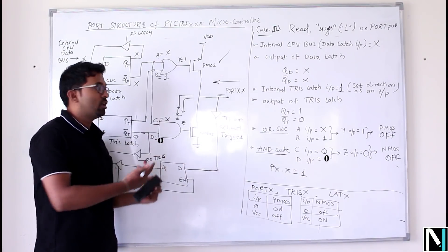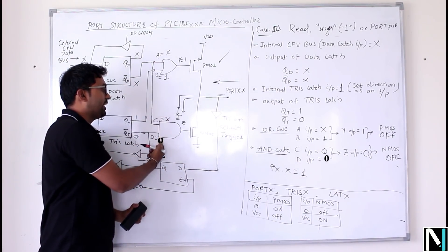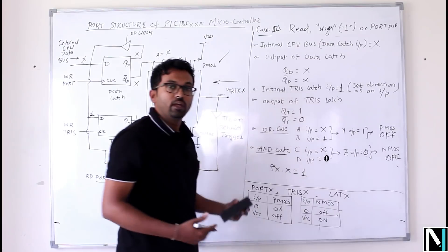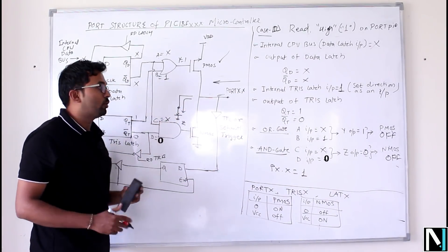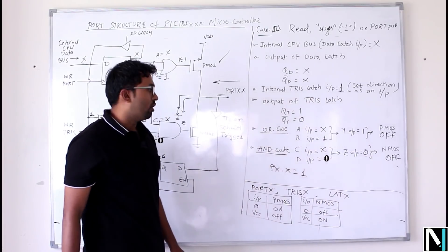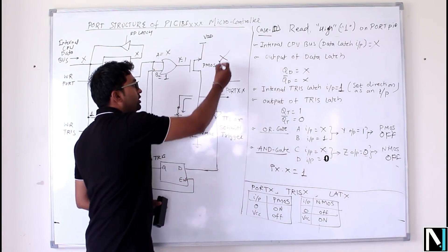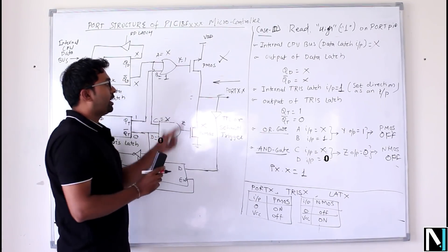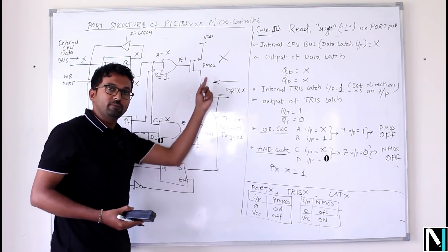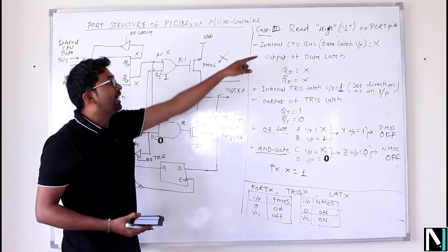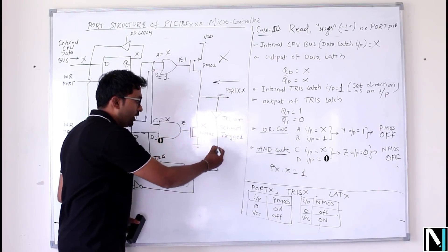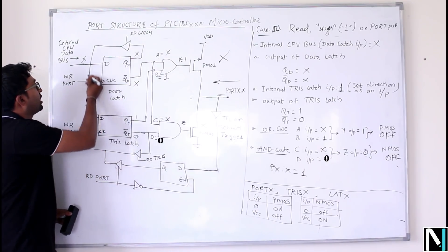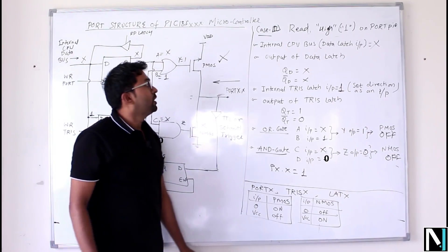For the AND gate, input D is don't-care multiplied by C (also don't-care), but since B is 1 and the AND gate receives the don't-care C, the output Z = 0, keeping NMOS OFF as well. With both PMOS and NMOS OFF, neither MOSFET interferes with the pin. If the external data is HIGH, it is read through the data read latch and transferred to the internal CPU data bus.